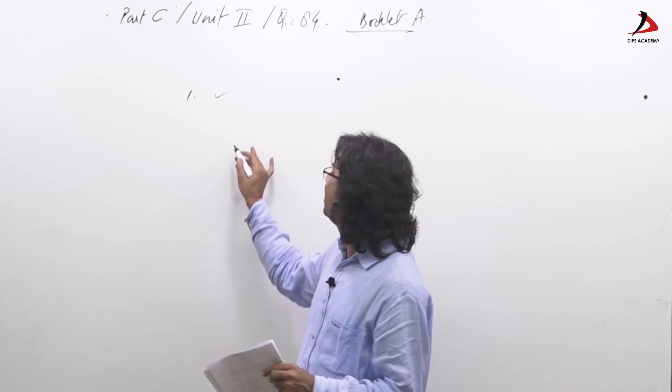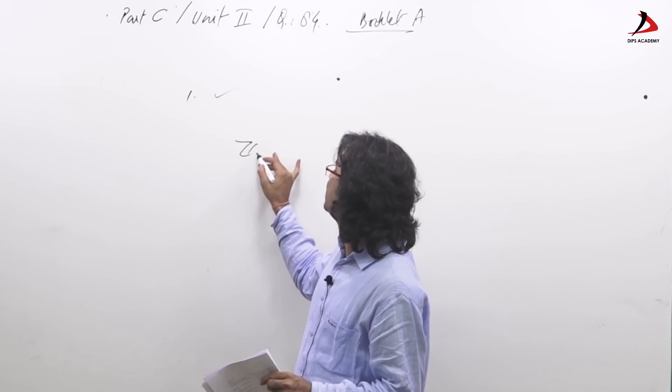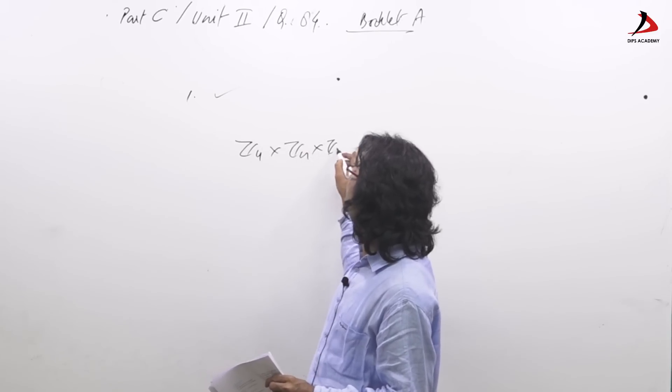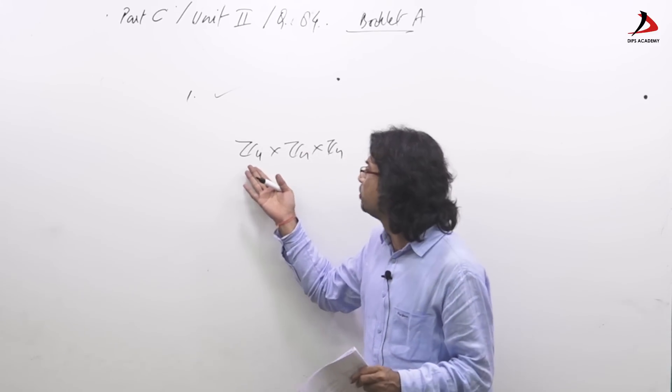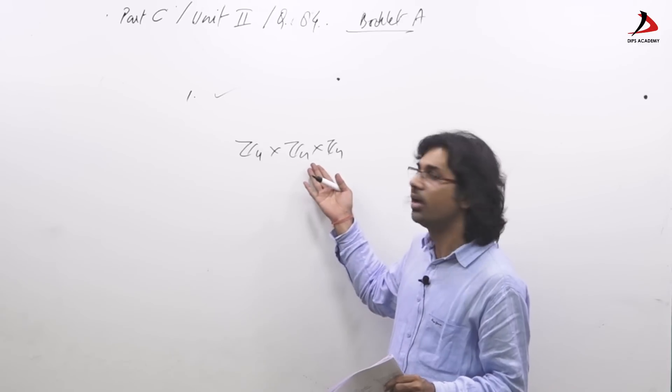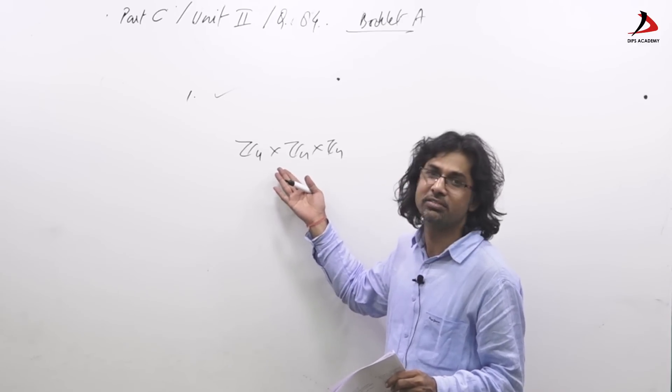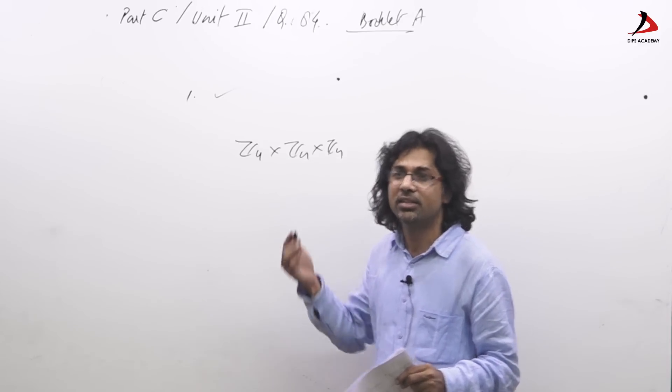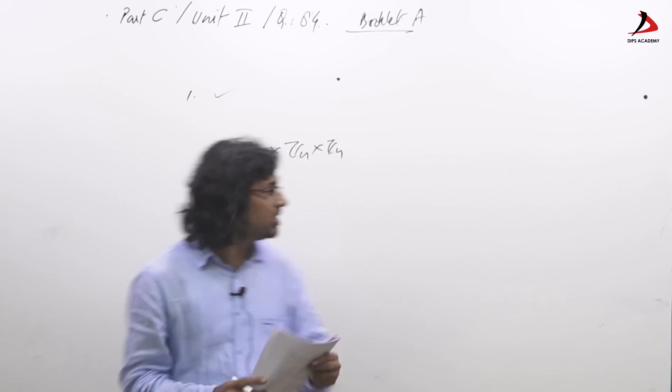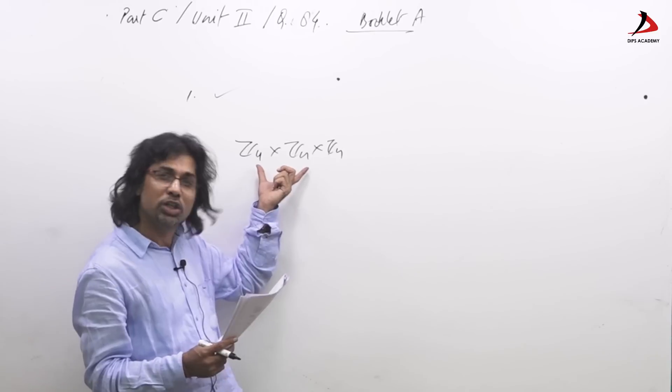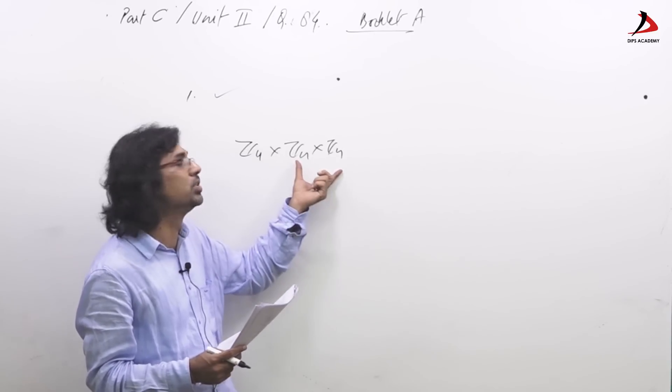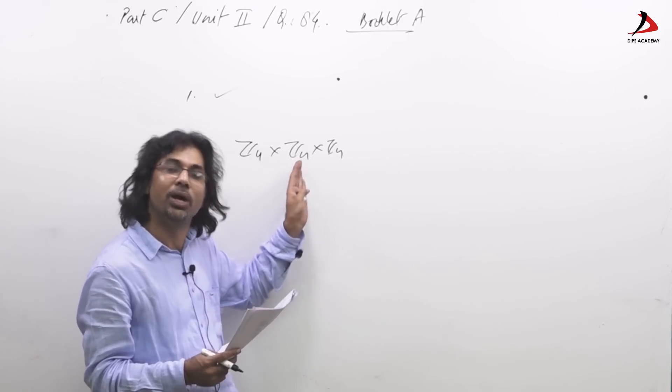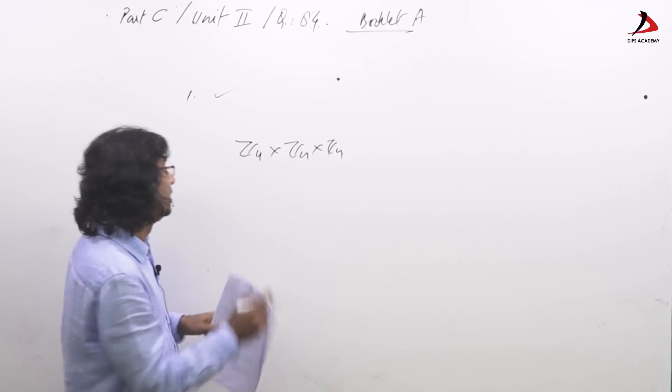For example see Z4 cross Z4 cross Z4. You keep on doing so, this is group of order 64 and there are divisors of 64 like 8, 32, but it does not have any element. The possible order of any element in this group is 1, 2 and 4 only.